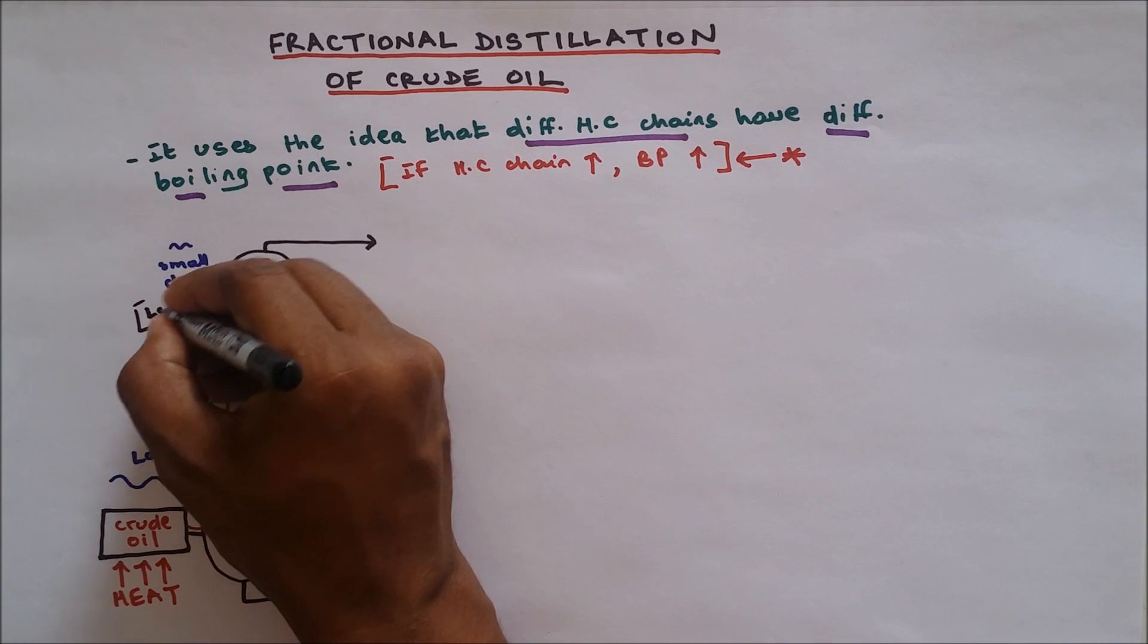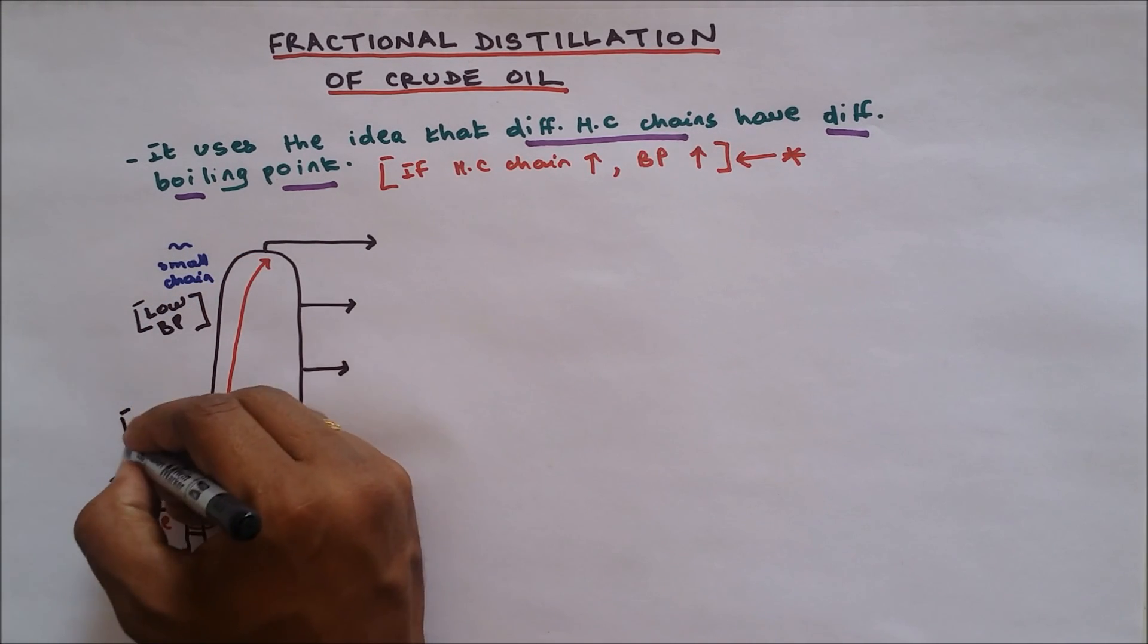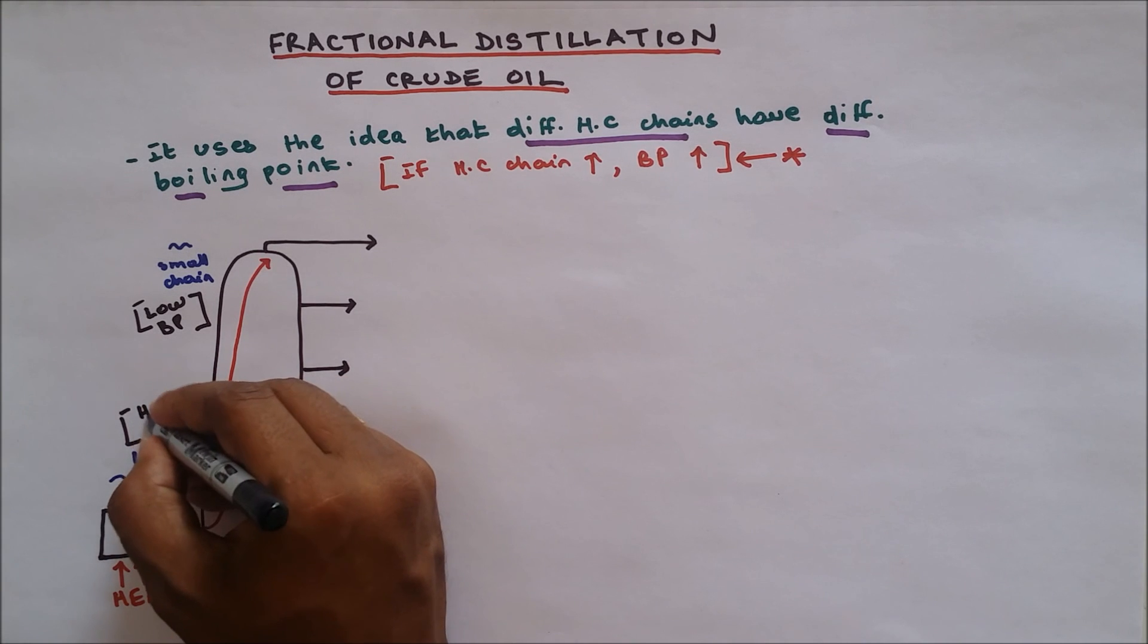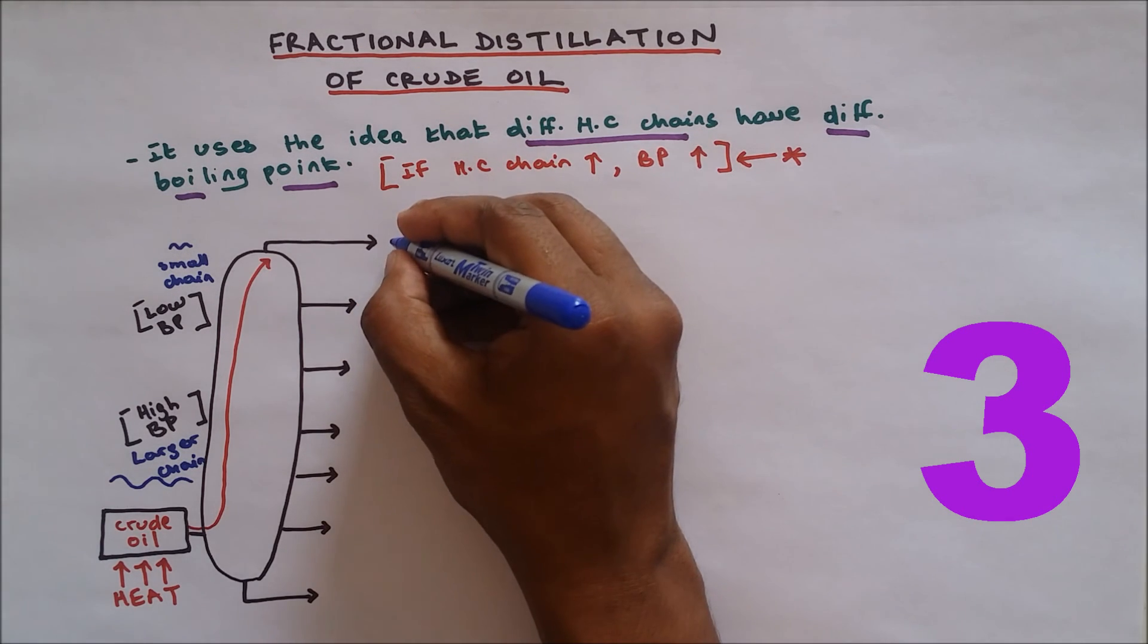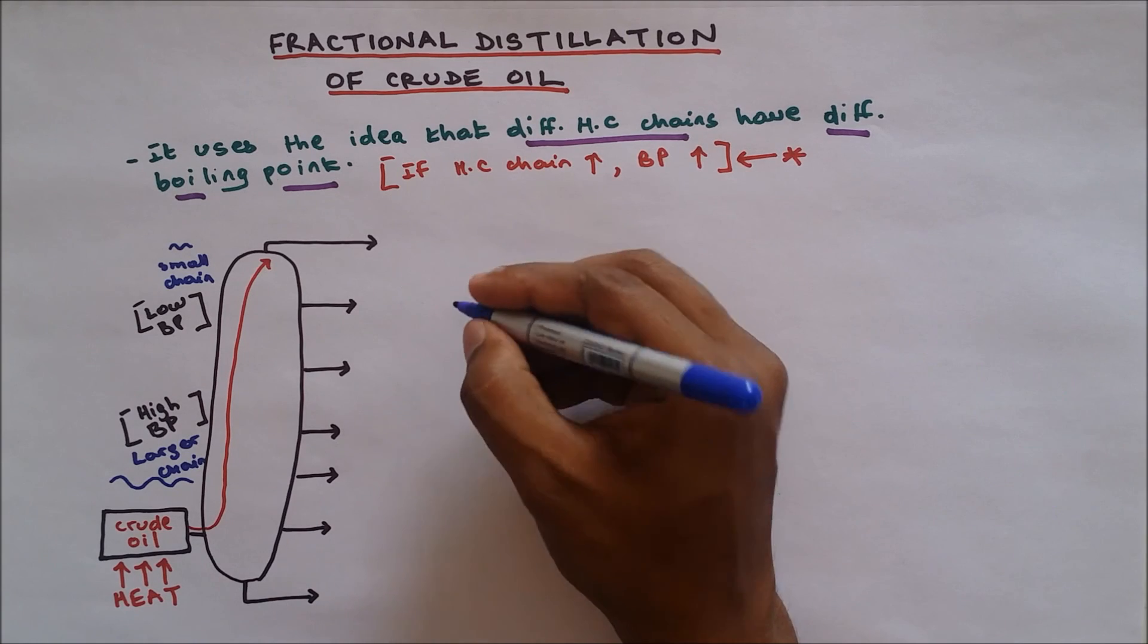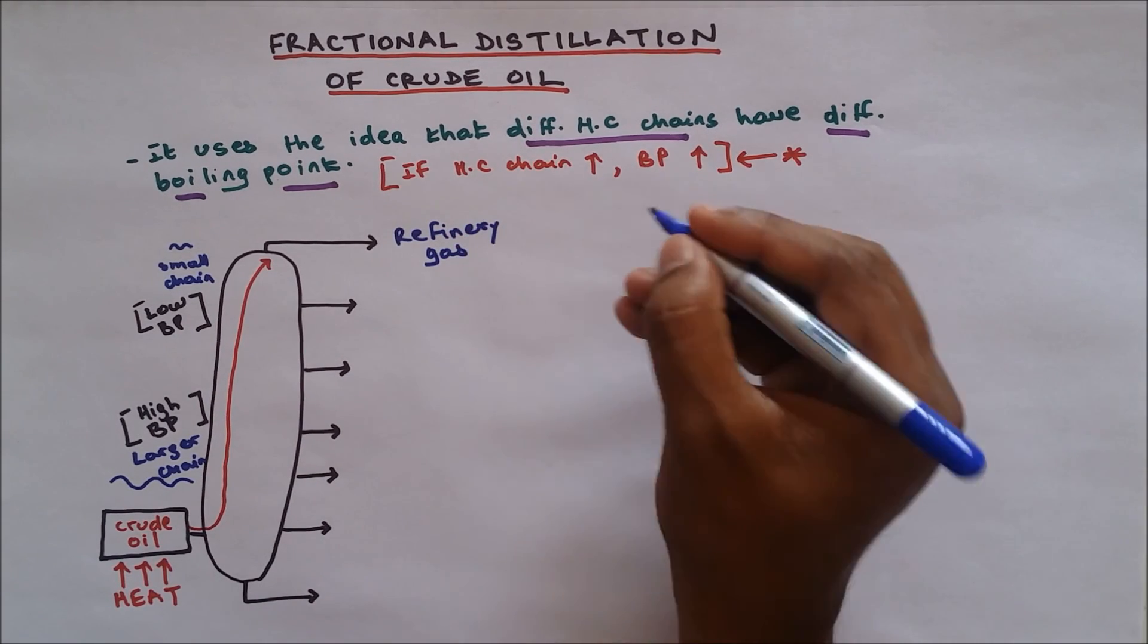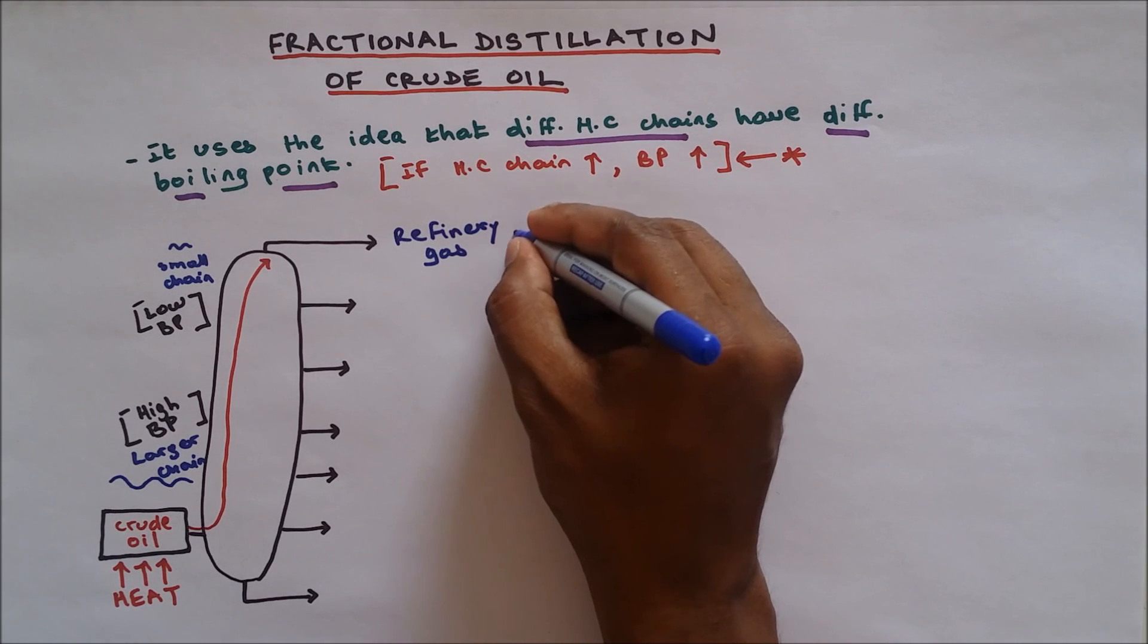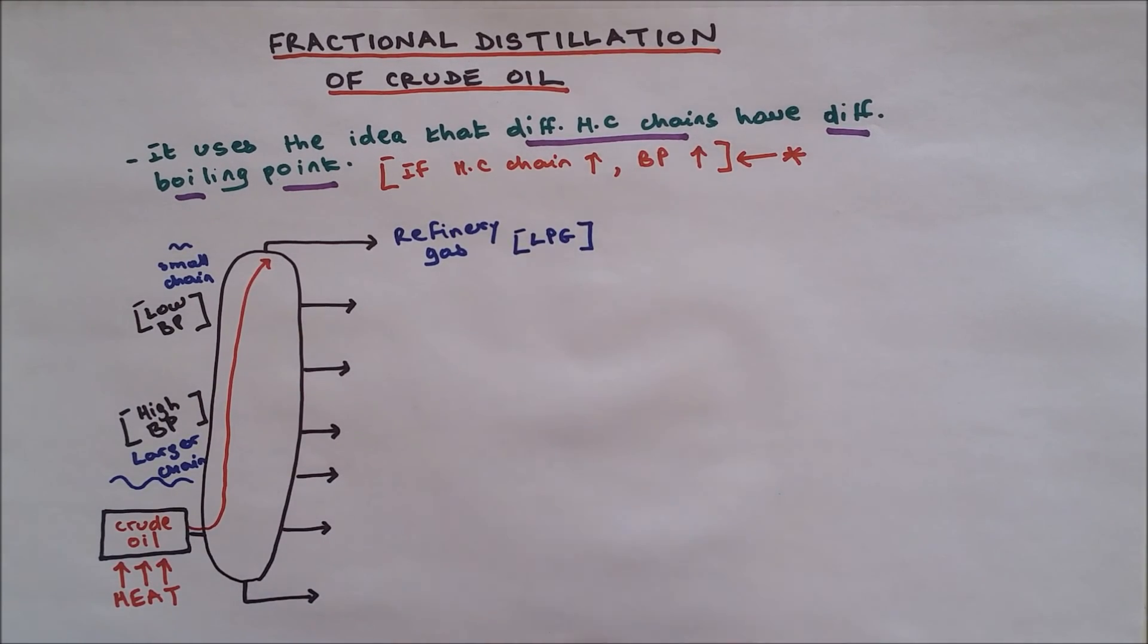Now what is produced at the top region of the fractional distillation? It's refinery gas, or we could call it LPG. LPG stands for liquefied petroleum gas.